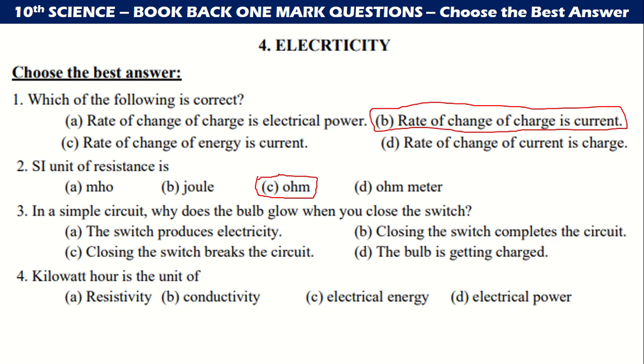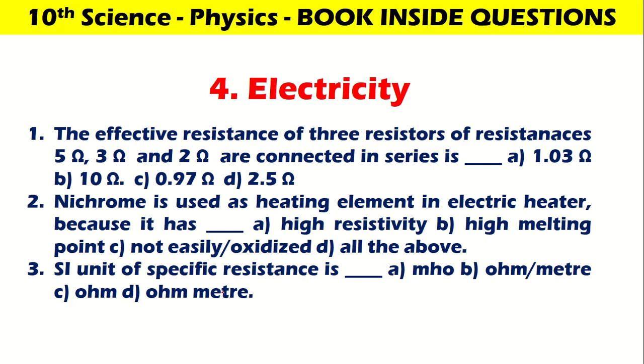In a simple circuit, why does the bulb glow when you close the switch? Closing the switch completes the circuit. Kilowatt hour is the unit of electrical energy. The effective resistance of three resistors of 5 amp, 3 amp and 2 amp connected in series, then your answer will be 10 amp.